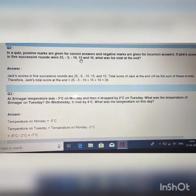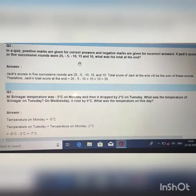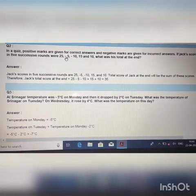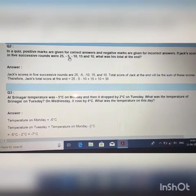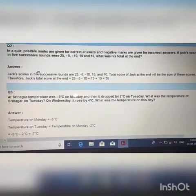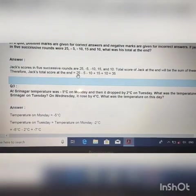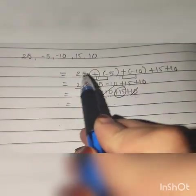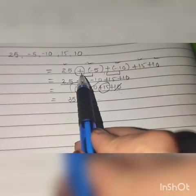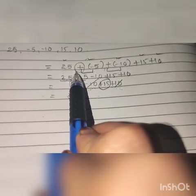You have to find out the total of Jack's score. If you have to find the total, means you are going to add all the marks. Here you can see minus 5 and minus 10, these both are negative marks. Now here we will write Jack's total score at the end is equal to, you will solve it in this way.